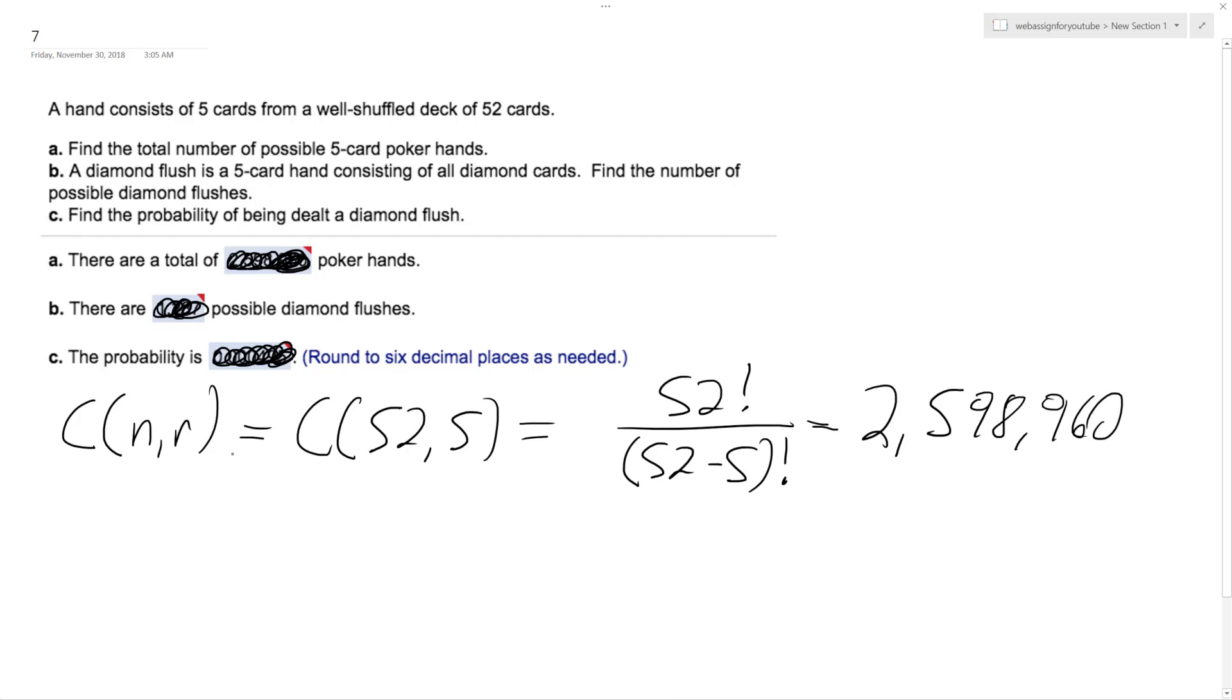And then we want to know the possible diamond flushes. A flush is all your cards are from that set, so a diamond flush. So that's going to be, again, another combination. So there's 13 diamonds and then that assumes 5 flush. So there's 1,287 different hands you can get.